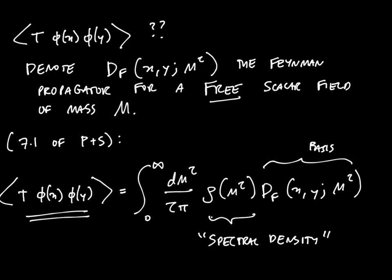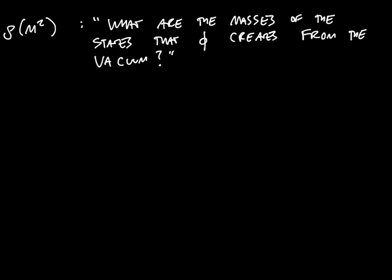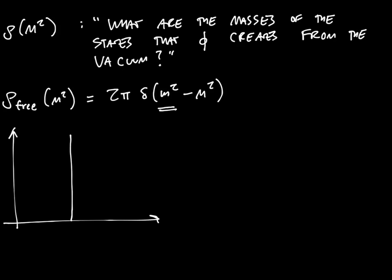Now what is ρ(M²) physically? ρ(M²) physically is the answer to the following question: what are the masses of the states that φ creates from the vacuum? Let me explain what I mean by this. For example, if we were doing a free scalar field, then the only state that you can create is a single particle state of a single φ particle. In that case it turns out that this ρ of M² looks like a delta function with support at the physical mass of the φ particle. In other words, ρ_free(M²) looks something like this—it's just a delta function at one point.